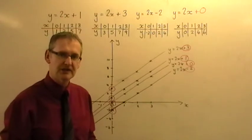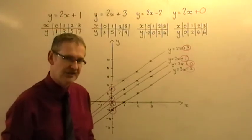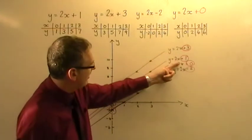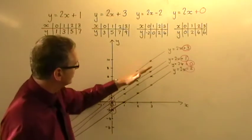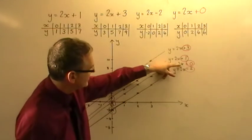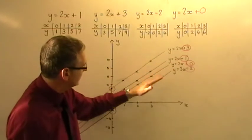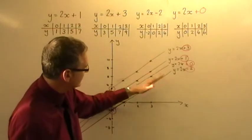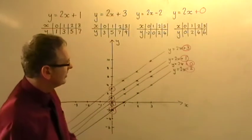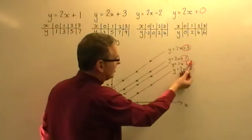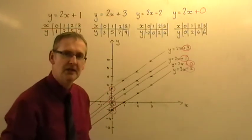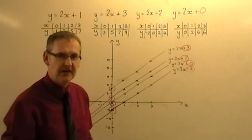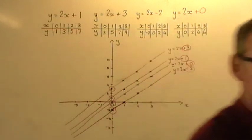So from this video, all you need to really deduce is, yes, okay, the number in front of the x will somehow control the slope. And if they're all the same value, they're going to have the same parallel line type effect. But more importantly, if you change the number on the end, you're going to change where the line crosses the y-axis. And for this video, that is the end. I'll see you next time.